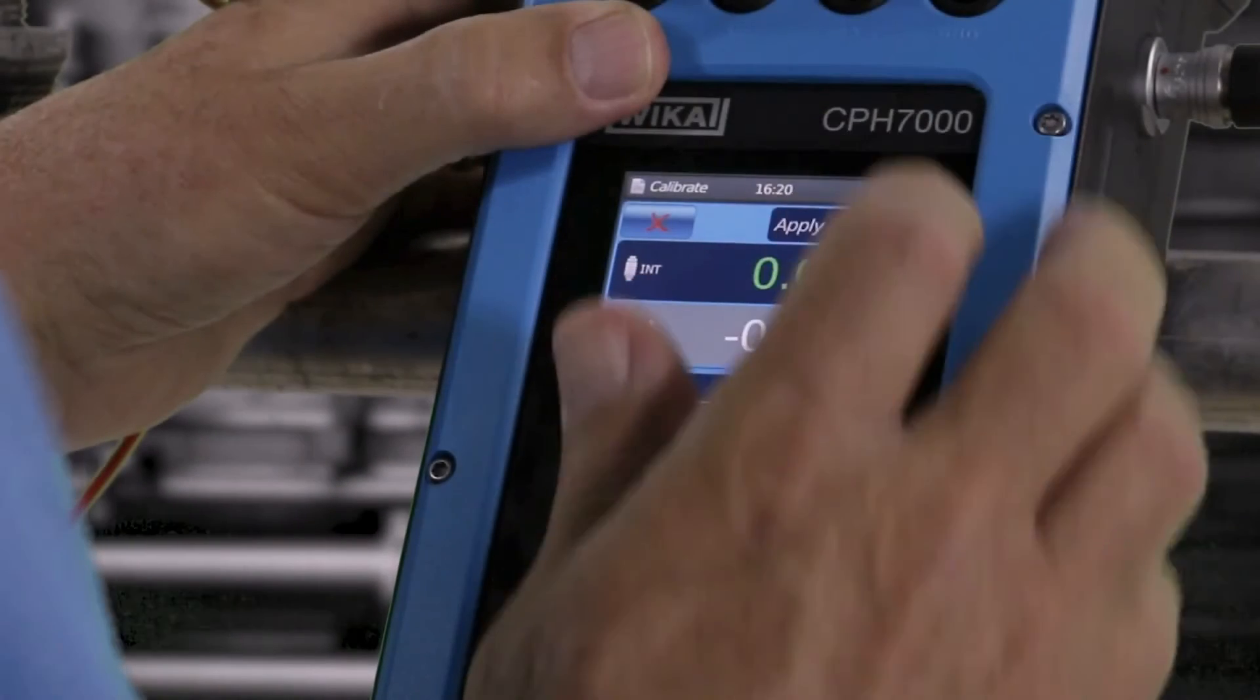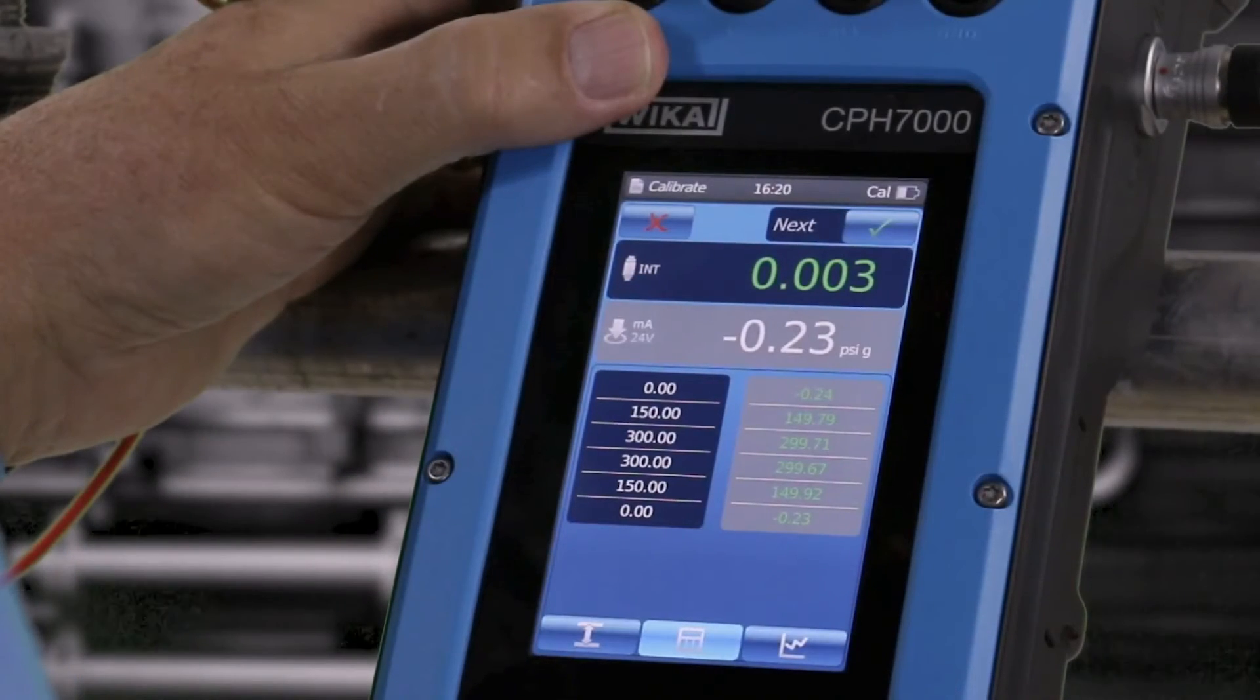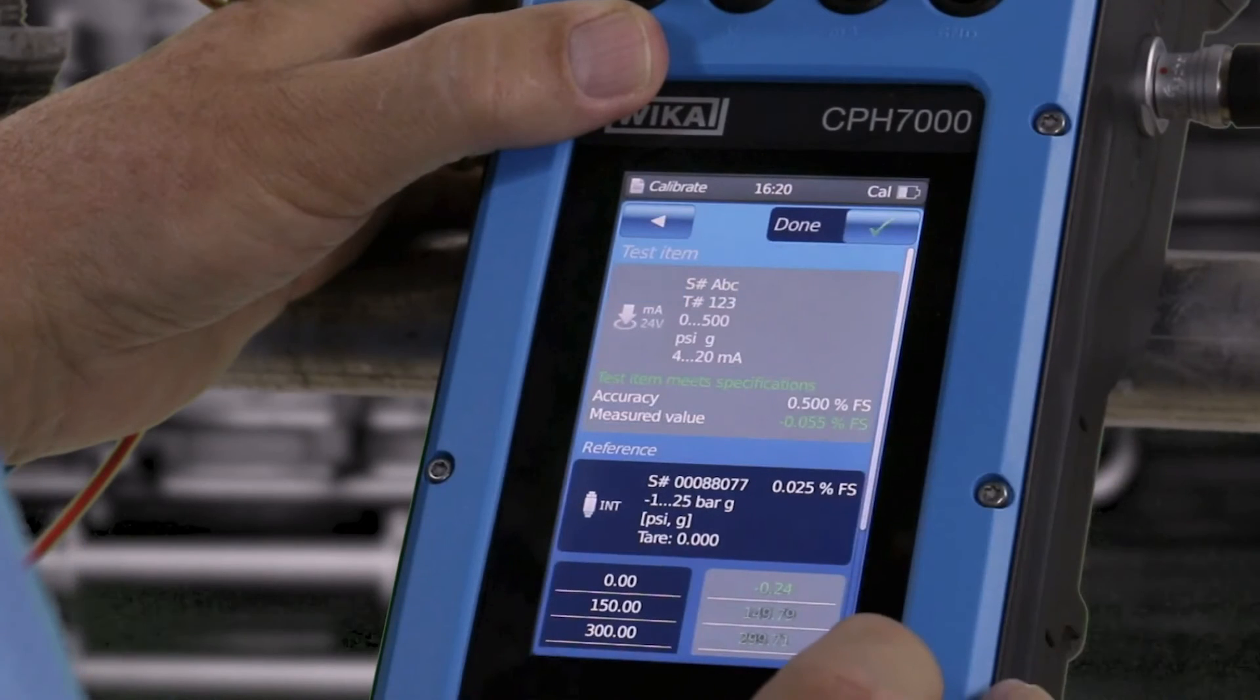When done, the calibrator will indicate if the test item meets specification. This is your as found calibration.